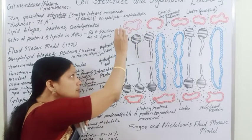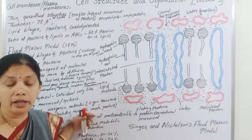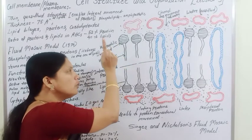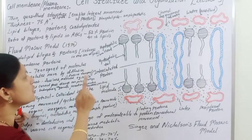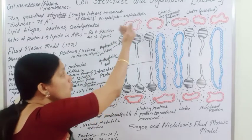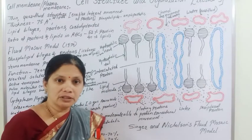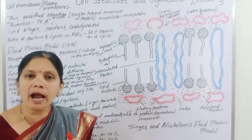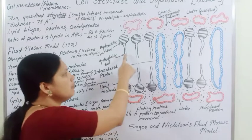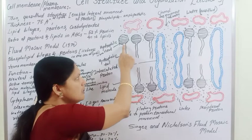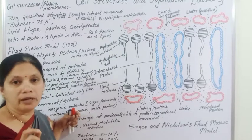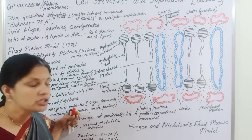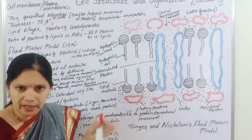The heads of the phospholipid molecules are polar — that is, hydrophilic — and these hydrophilic heads are present towards the outer side of the membrane. The tails are non-polar, or hydrophobic, and are present towards the inner side of the phospholipid bilayer.